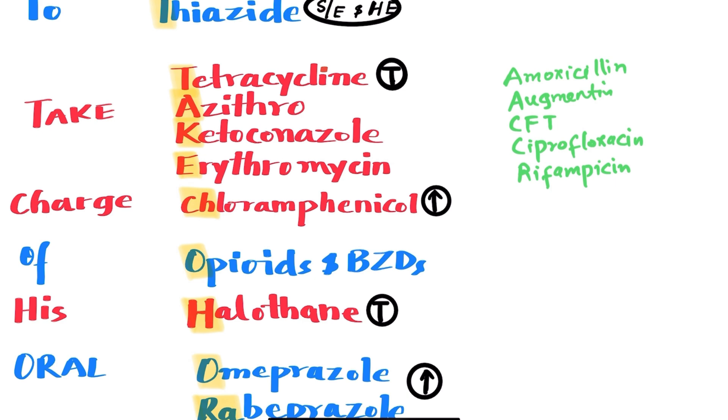And OF stands for opiates and benzodiazepines. These medications can lead to hepatic encephalopathy, and many are metabolized by the liver. His is for halothane. That is a hepatotoxic medication.